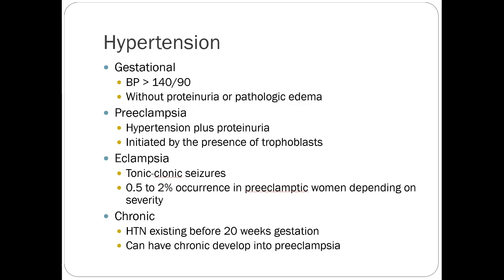Hypertension: gestational hypertension is blood pressure over 140/90 without proteinuria or pathologic edema. Once you add proteinuria, you get preeclampsia, which is initiated by the presence of trophoblasts. About one half to two percent of preeclamptic women will progress to an eclamptic seizure without treatment, so we want to treat everyone to prevent that. For patients with chronic hypertension existing before 20 weeks gestation, you treat them the same way, while watching out for the one class of medications we really can't give in pregnancy — ACE inhibitors and ARBs.